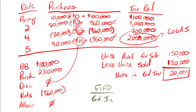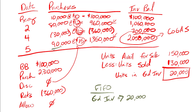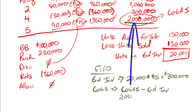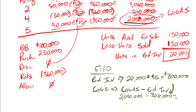Ending inventory under FIFO: I assume those 20,000 units are from the most recent purchase. That purchase had 90,000 units — more than enough — so all 20,000 come from the $15 per unit purchase, giving ending inventory of $300,000. Cost of goods sold equals cost of goods available for sale minus ending inventory: $2,050,000 minus $300,000 equals $1,750,000 under FIFO.